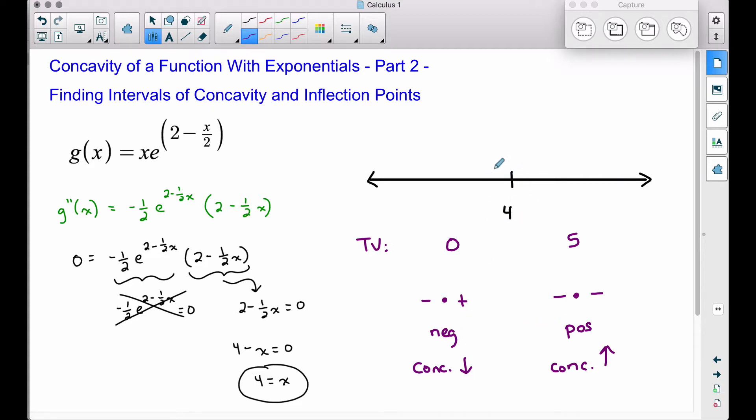So we do have an inflection point when x equals four. Let's go ahead and list our intervals of concavity and then we'll come back and find that actual ordered pair where that inflection point is. We do have an inflection point because our concavity changes from concave down to concave up.